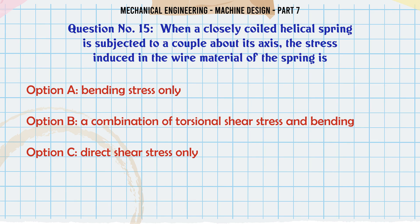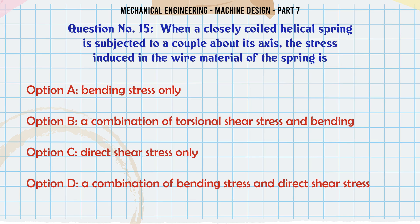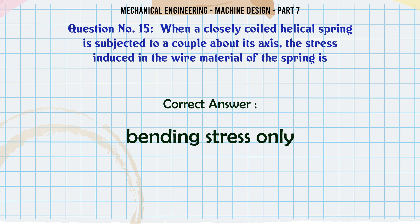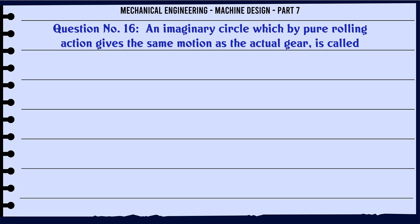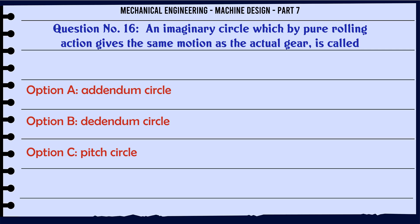When a closely coiled helical spring is subjected to a couple about its axis, the stress induced in the wire material of the spring is: a) bending stress only, b) a combination of torsional shear stress and bending, c) direct shear stress only, d) a combination of bending stress and direct shear stress. The correct answer is: bending stress only.